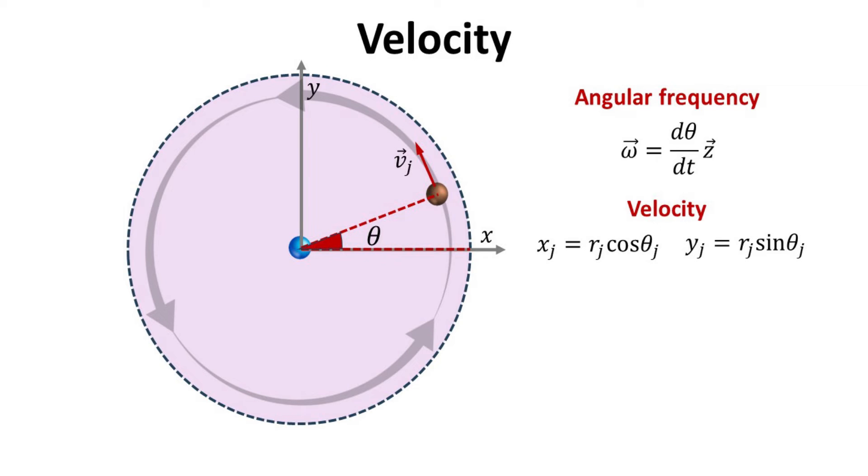Now we can zoom into one point particle, here the red particle, and try to describe its dynamics in the presence of this angular motion. Simple trigonometry allows us to write down its xy-coordinates. Its velocity components can then be expressed in terms of the angular frequency and the spatial coordinates as shown. In general coordinate system, one can show that the velocity of a point mass is given by the cross product between its position and the angular velocity. We highlight this result as we will make use of it later.